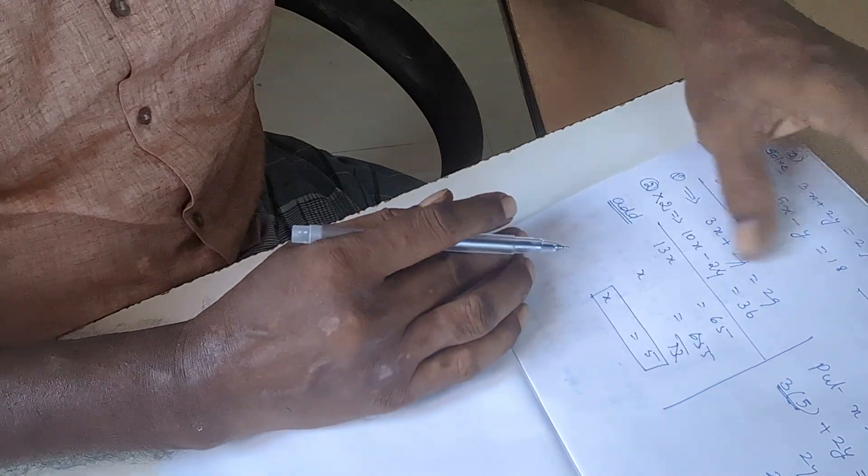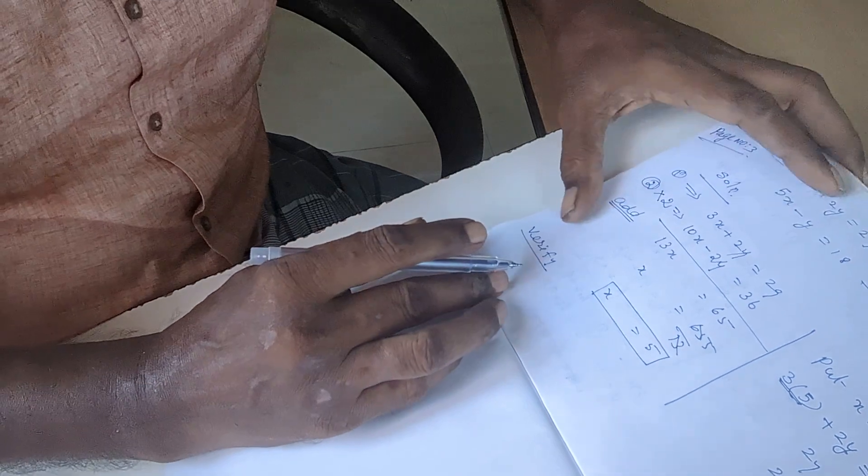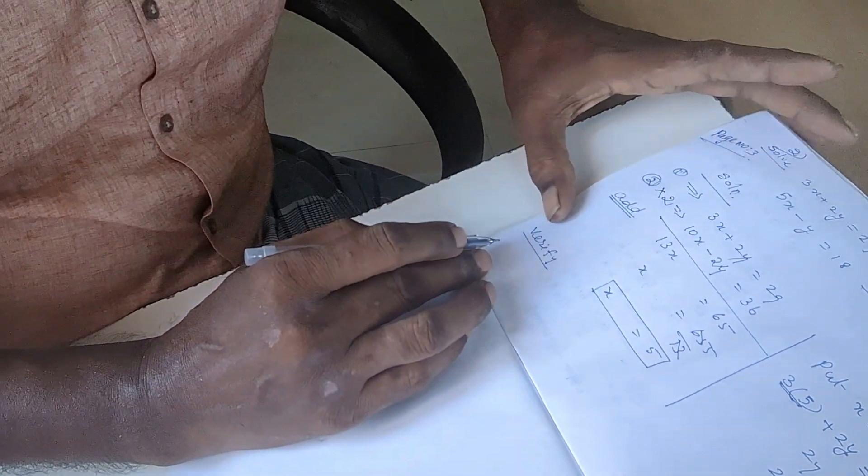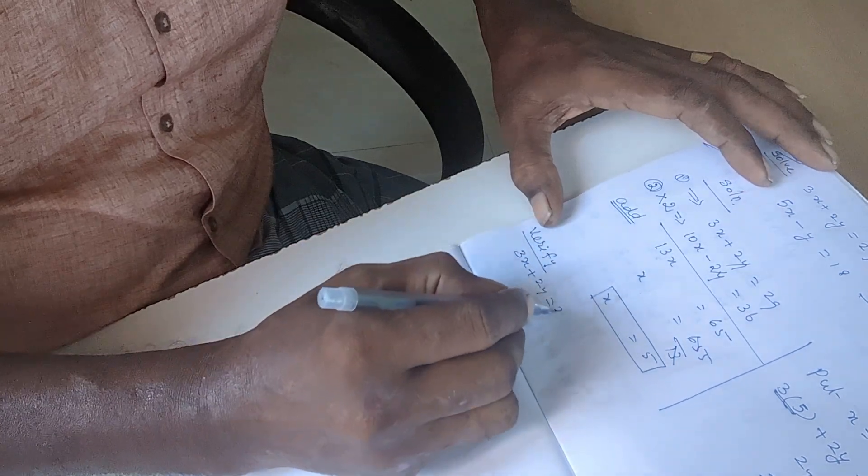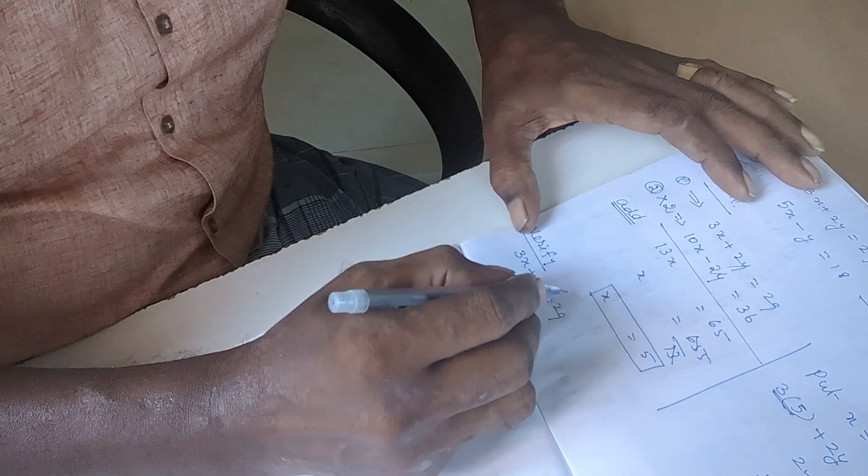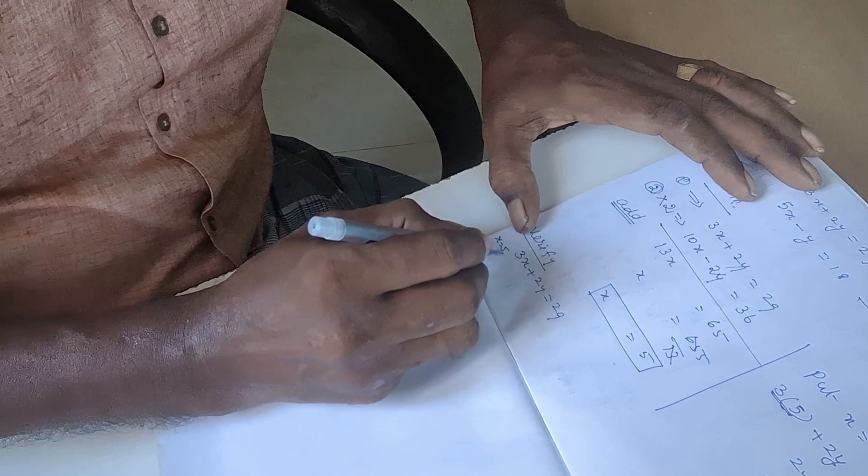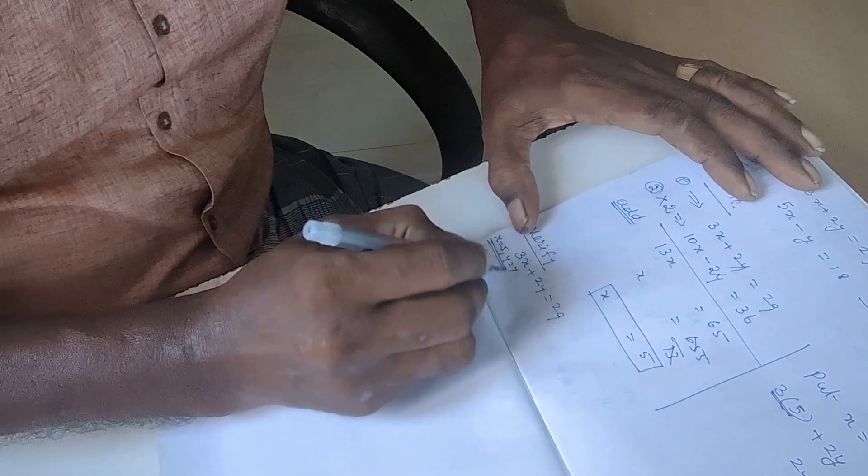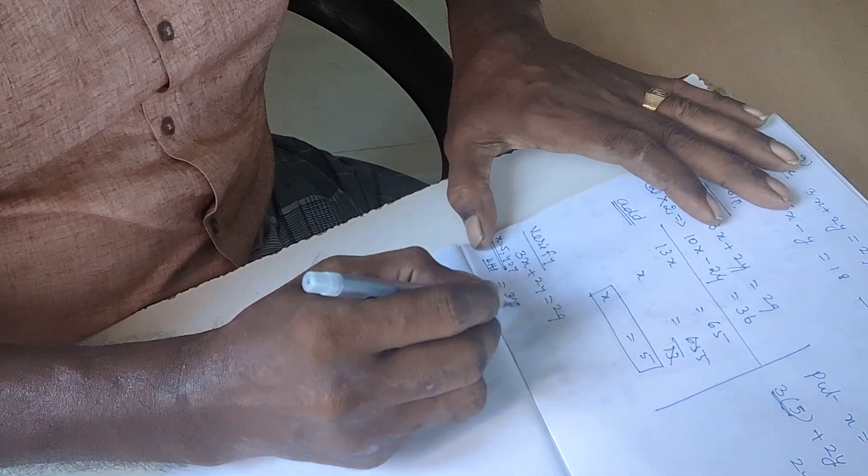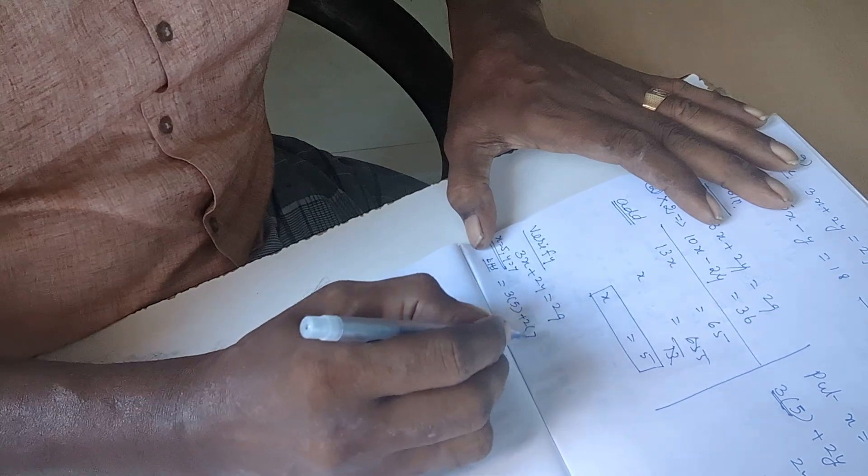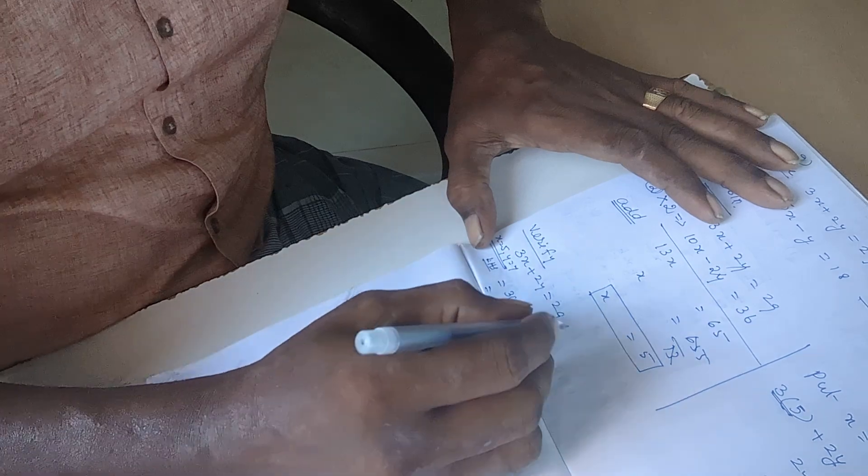Now we verify this. Verify first equation: three x plus two y equals twenty-nine. Substitute the value x is equal to five and y equal to seven. So now we take left-hand side: three into x is five, and two into y is seven. Fifteen plus fourteen equals twenty-nine, so this is verified. First one is verified.